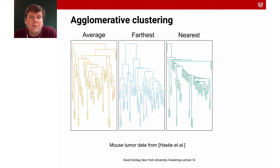Here I try to visualize these, the average, farthest, and nearest based on the mouse tumor data from Hastie et al. And you can see that it really has a strong influence on the result, which also shows that these algorithms are not magic. They don't know anything in a way, they just follow a set of rules and then they come up with some order based on the criteria that you defined.